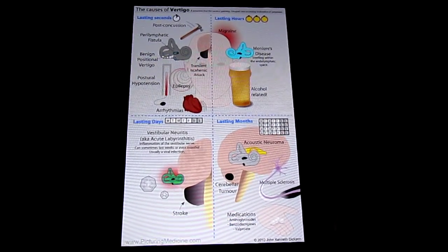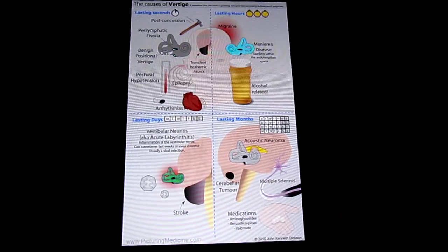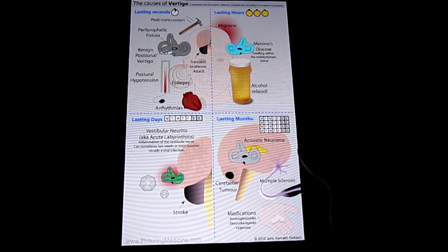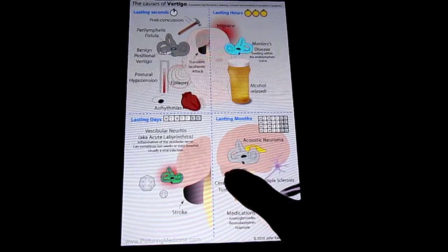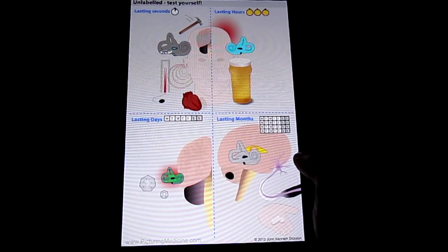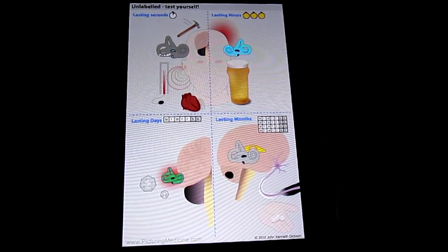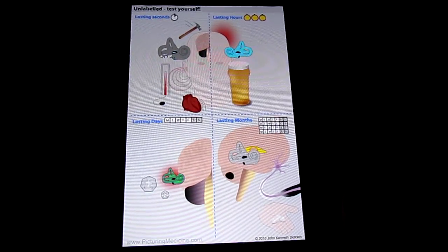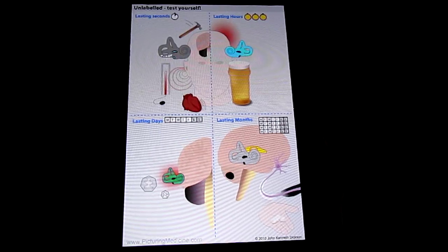This diagram illustrates the various causes of vertigo. We'll remove the labels from the diagram so that the image becomes clearer, and I'll explain it thoroughly for you.